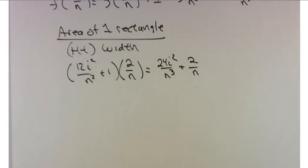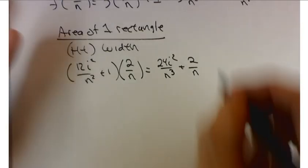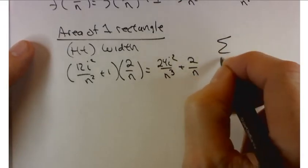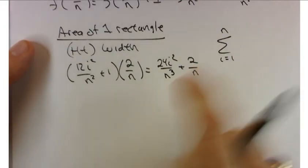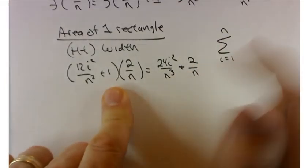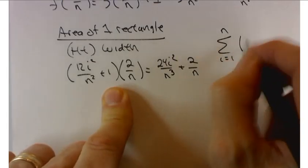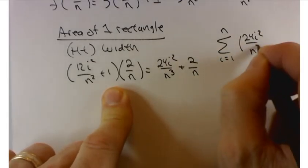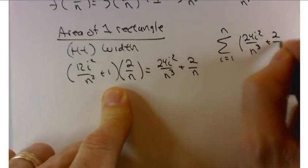So this is the area of one rectangle. If I wanted to define the area of all such rectangles, I would add them up using our summation notation. So the sum from i equals 1 to n. So this is just the i-th rectangle. Let's do it for all of them. 24i² over n³ plus 2 over n.